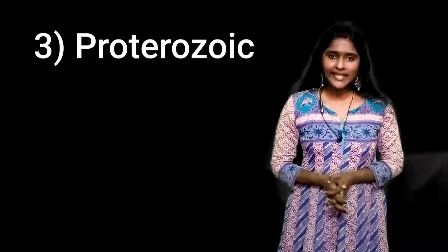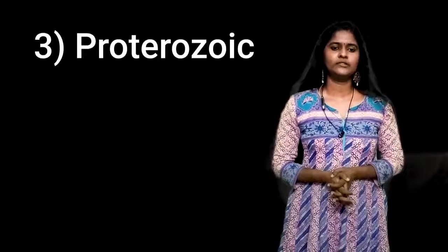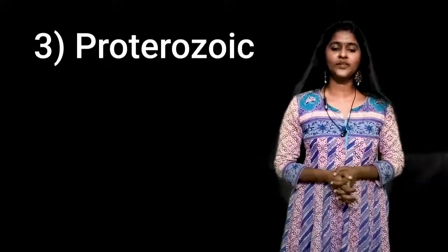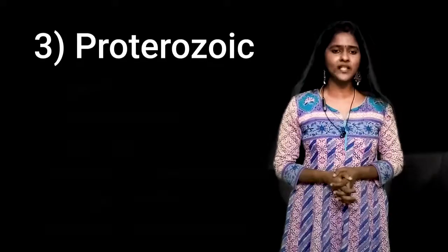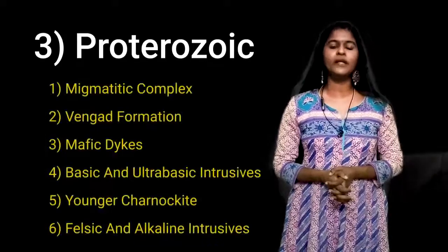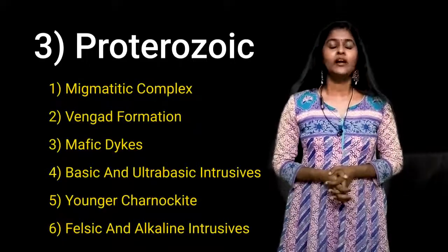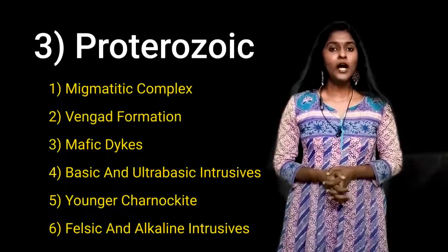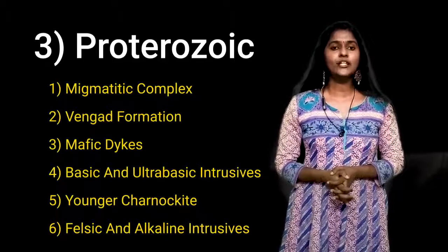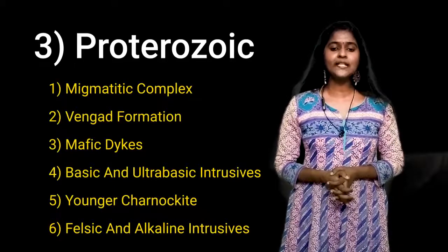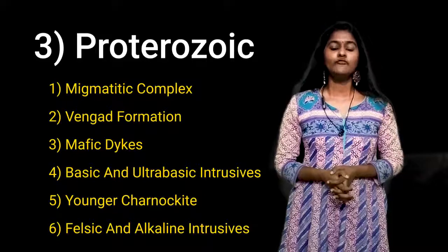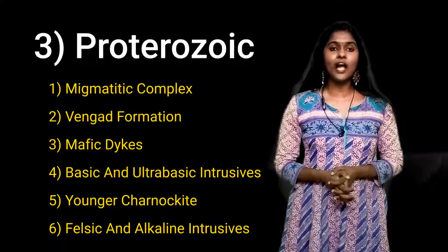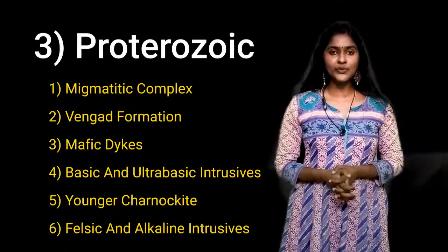Then the Proterozoic Eon. The Proterozoic Eon is categorized into six categories: Migmatite Complex, Wyanad Formation, Mafic Dykes, Basic and Ultrabasic Intrusives, Anorthosite Charnockite, and Felsic and Alkaline Intrusives.